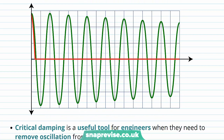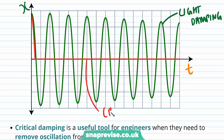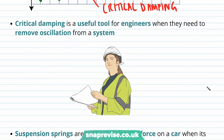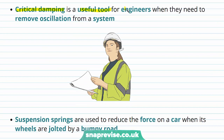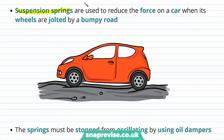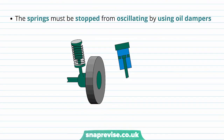We define critical damping as when the displacement of an object decreases to zero in the shortest time possible without any oscillation. On our displacement-time graph, in green is our familiar light damping curve, and in red we've plotted a critically damped oscillator — no oscillations occur and the displacement changes to zero in the quickest time possible. Critical damping is a useful tool for engineers when they need to remove oscillation from a system. For example, suspension springs reduce the force on a car when its wheels are jolted by a bumpy road, and we must stop the springs from oscillating by using oil dampers.